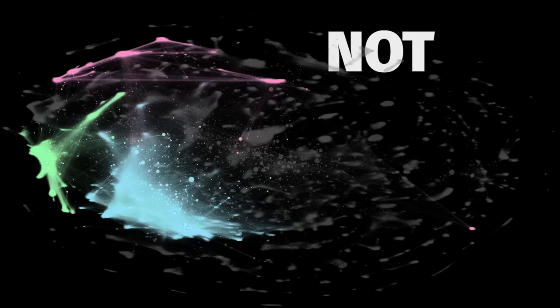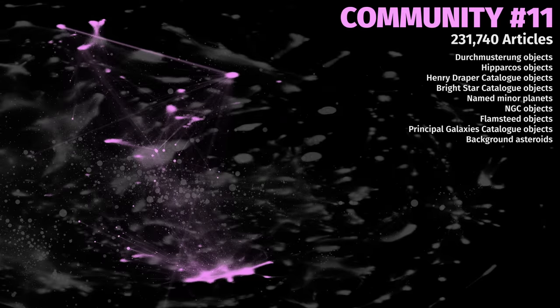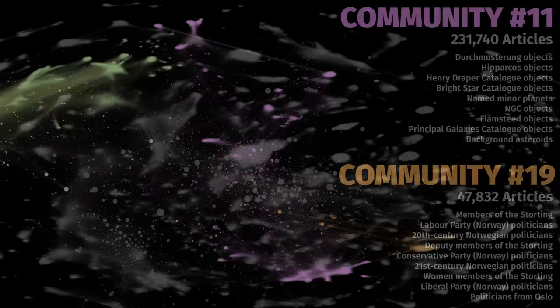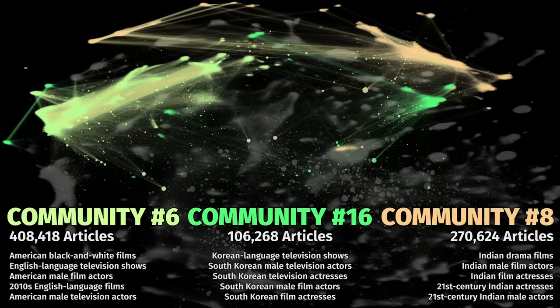Having communities about politics, music, and video games makes sense because they're both popular and broad subjects. But not all communities are so straightforward. For example, the top categories of community number 11 are about space objects, and community number 19 is related to Norwegian politicians. One of the most interesting things about the way articles are separated into communities is the way they can reflect society. Community number 6 is all about English and American movies and television, but there are also two separate communities for Indian and Korean movies and television, showing the popularity of both and their distinct separation from Western cinema.